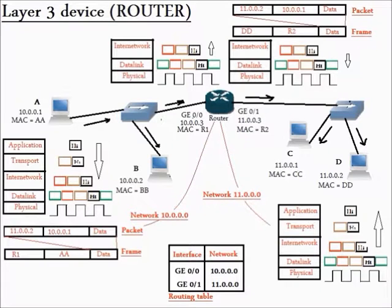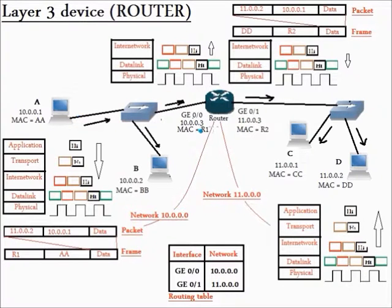Let's take a look at the data sent over the router's interface Gigabit Ethernet 0/1. In the internetworking packet, we will find that the destination IP address equals 11.0.0.2, which is the IP address of destination computer D, and the source IP address is 10.0.0.1, which is the IP address of source computer A. In the data link frame, we will find that the destination MAC address equals DD, which is the MAC address of destination computer D, and the source MAC address equals R2, which is the MAC address of the router's interface Gigabit Ethernet 0/1.